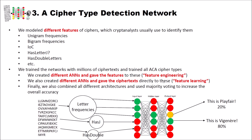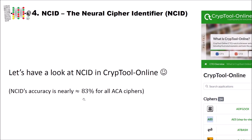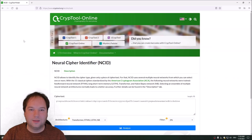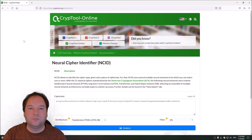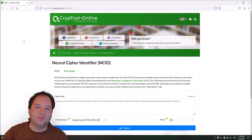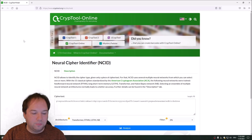Now, after understanding the basics of artificial neural networks and feed-forward networks, let's have a look at NCID — our neural cipher identifier in CrypTool Online. Right now, NCID's accuracy is nearly 83% for all ACA ciphers. So when you give a ciphertext encrypted with one of the ACA ciphers to these neural networks, they should answer correctly in 83% of cases. I will link the page below this video so you can test NCID yourself.